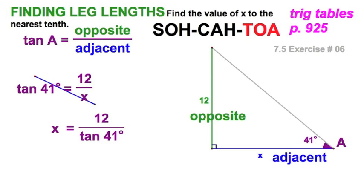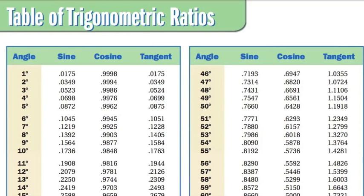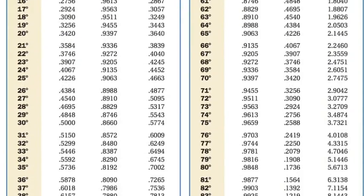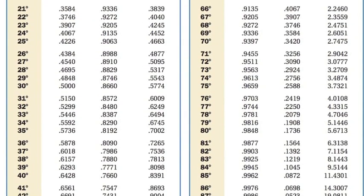Now, instead of using our calculators, we're going old school so you know how to do it. Trig tables. Don't worry, you'll use calculators on the next one. You've got a trig table in your textbook, page 925. It looks like this. All you do is scroll down so you get 41 degrees, and I can read in the third column. That's the tangent ratio, 0.8693.